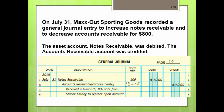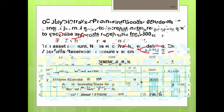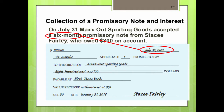The journal entry in the general journal to record receipt of the note for the customer who owed $800 is sometimes called a conversion journal entry. Notes Receivable is debited for $800, and Accounts Receivable for Stacy Fairley is credited for $800 — this is where you would include the promissory note number in the description.